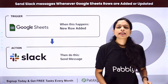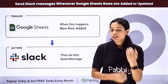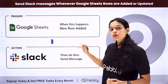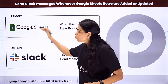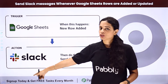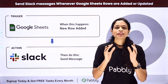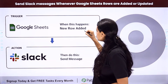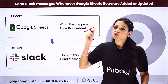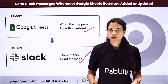Similarly, let's say your team is on Slack. Every time there is a new lead registered on Google Sheets, you want that information to be shared with your team. You can set up this automation, and here also you will save a lot of time which you can use in enhancing new opportunities.